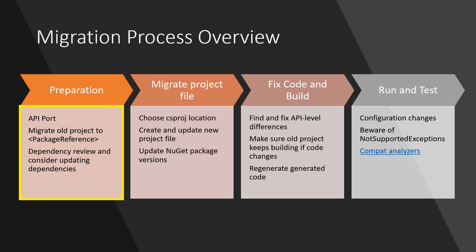The migration process we're going to go through during these videos is four steps. The first step, which we're covering in this video, is all about getting ready to port. It's about understanding the dependencies the project has so that we know what work we have ahead of us, and getting the existing .NET Framework project into a state that will make it easy to port in the subsequent steps.